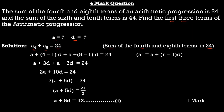Using the formula for the nth term of an AP: a₄ = a + 3d and a₈ = a + 7d. So (a + 3d) + (a + 7d) = 24, giving 2a + 10d = 24. Taking 2 as common: 2(a + 5d) = 24, so a + 5d = 12. This is the first equation.